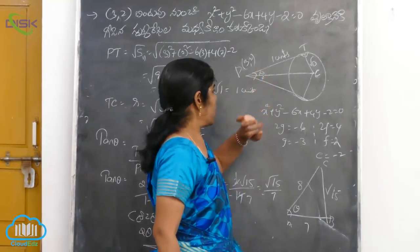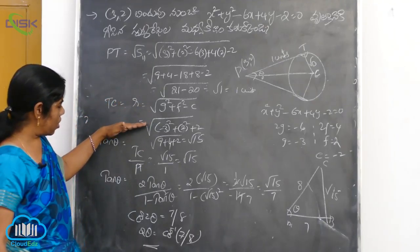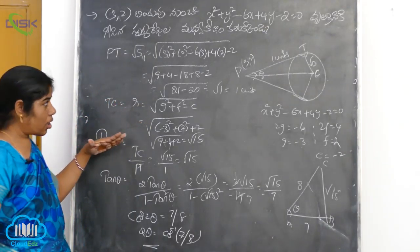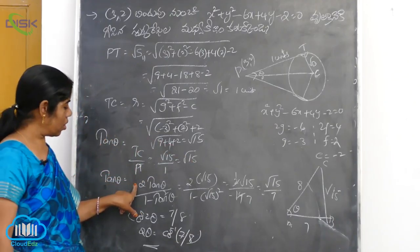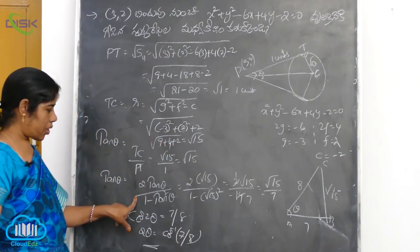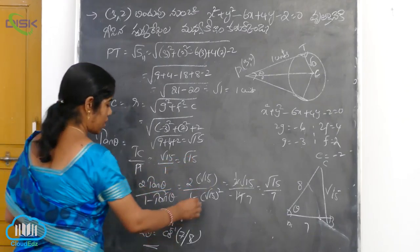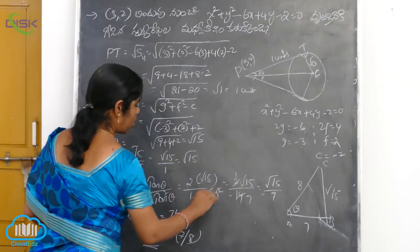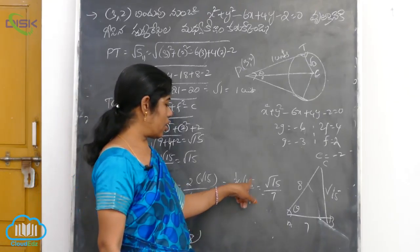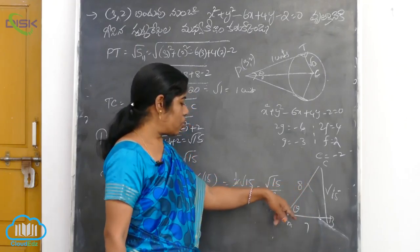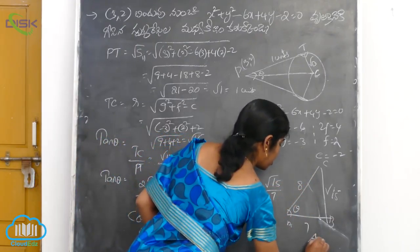Now we will find the radius (vyasaradha). Using this radius, we apply Pythagoras theorem: ac square is equal to ab square plus bc square. Using the formula: tan theta with 2 tan theta by 1 minus tan square theta.